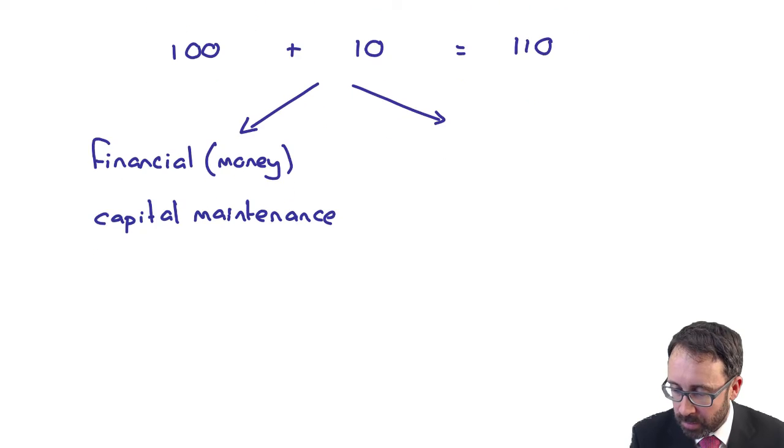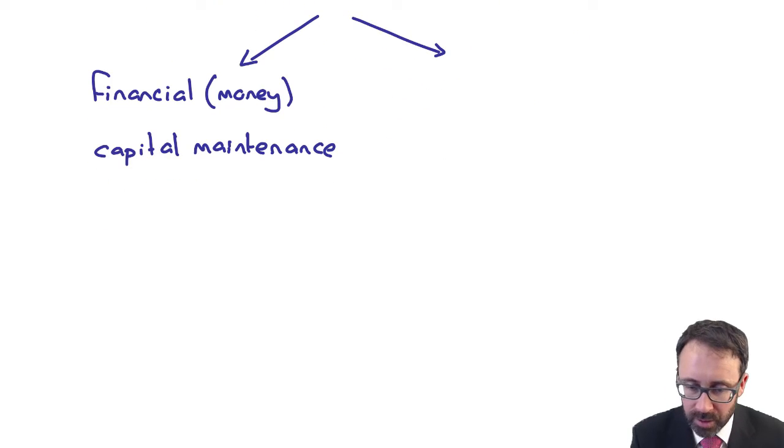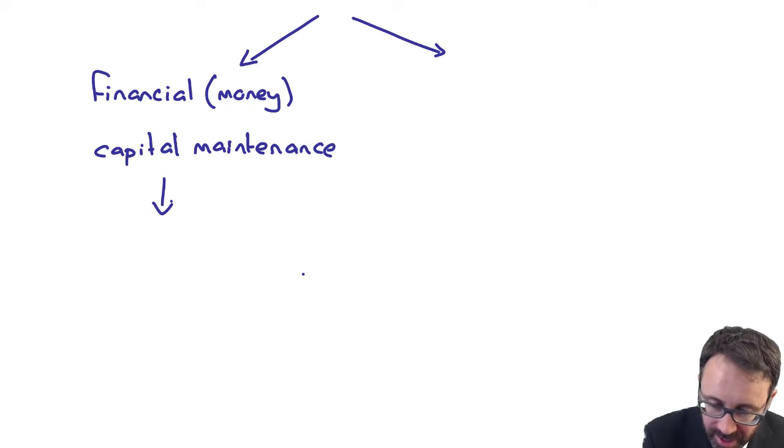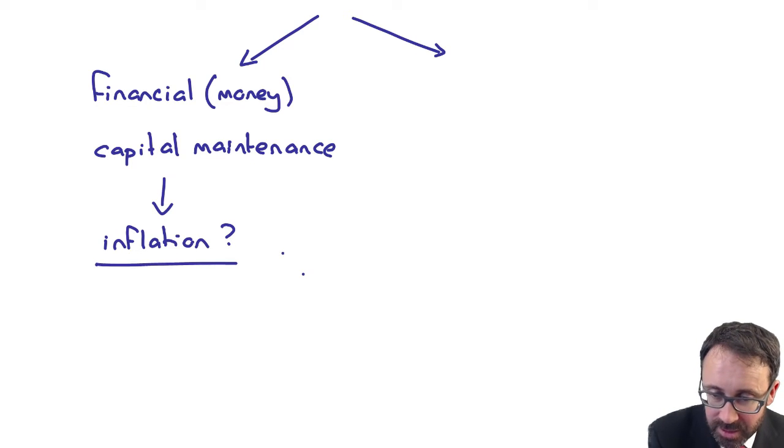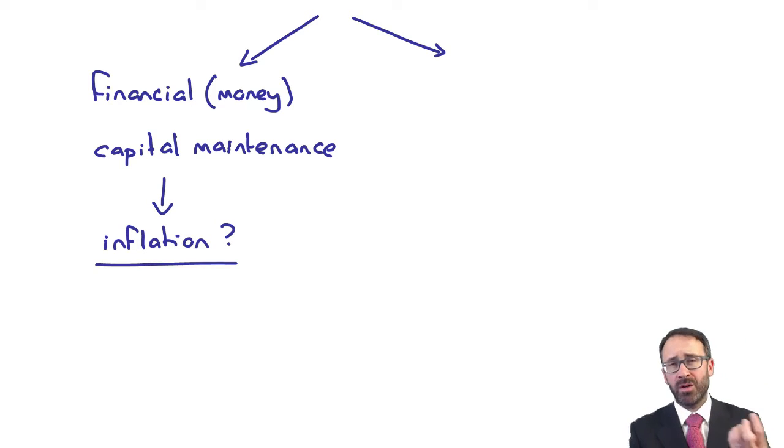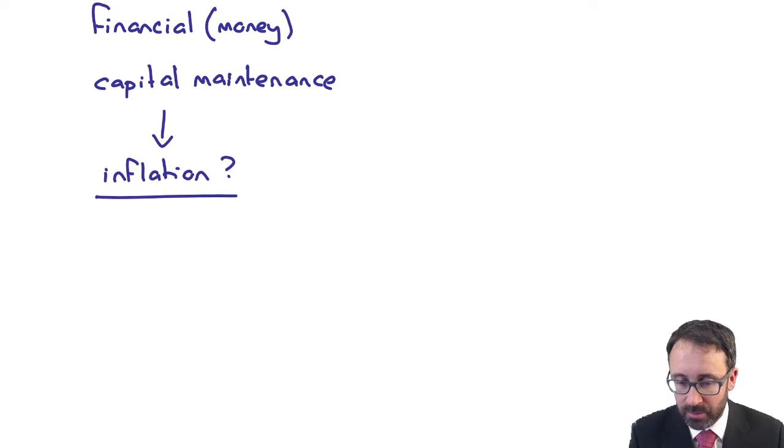But what happens effectively, maybe if there is some form of inflation? If there is some form of inflation and that's going to impact your profits, it could be that your closing capital at the end of the year is much higher than what we expected it to be. If the closing capital is much higher, then therefore your profits effectively are going to be much higher too.